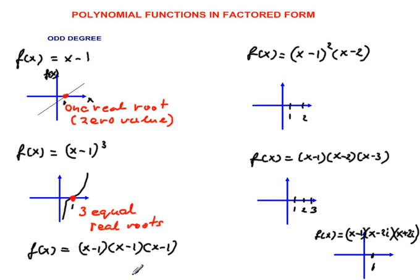Odd degree simply means the degree of the highest term is 1, in that case linear function, the next will be 3, 5, 7, etc. So you get the idea.